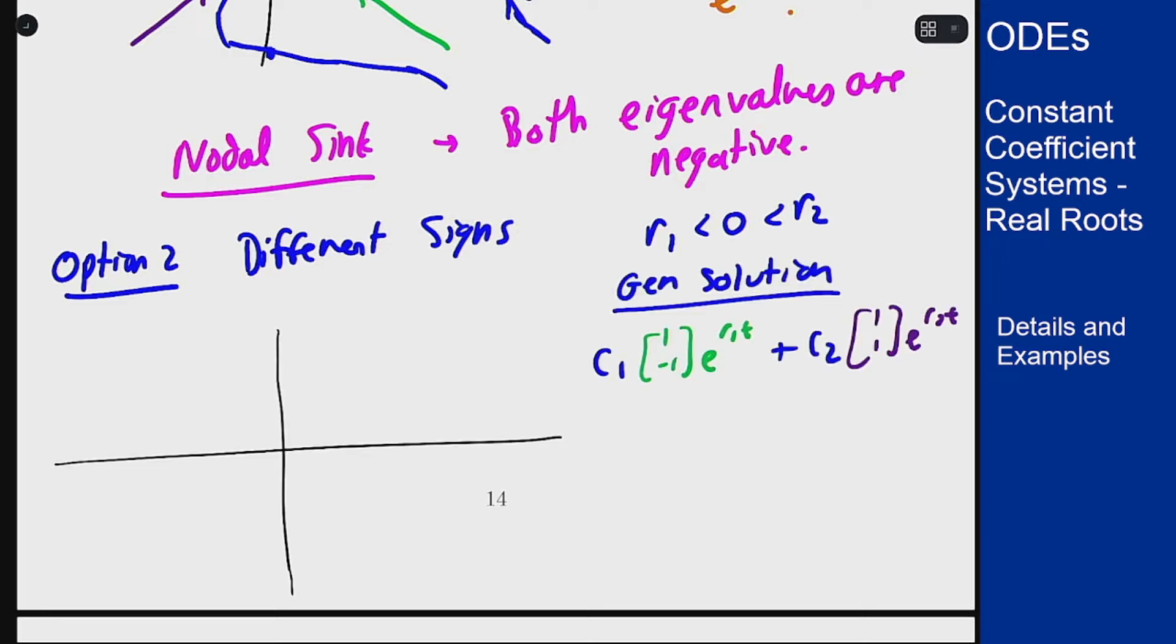We can draw in our same eigenvectors like before. r1 is still pointed in because that eigenvalue is negative but the r2 solution is now pointing out because it is a positive eigenvalue which is going away from the origin.